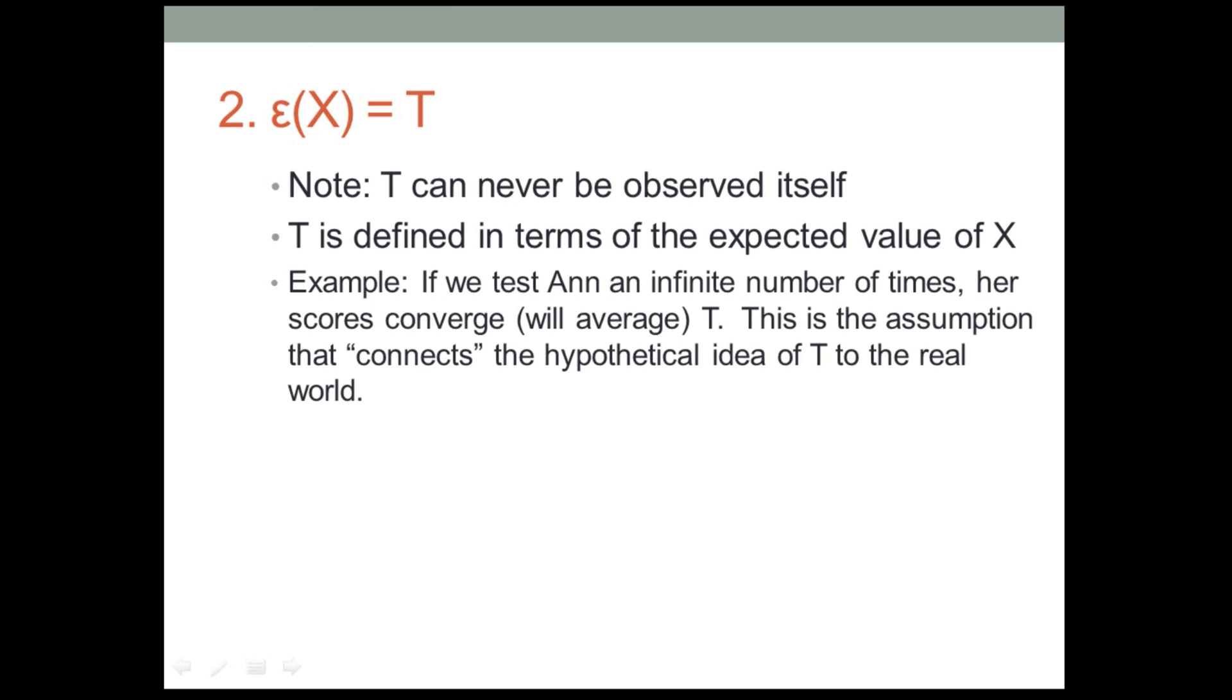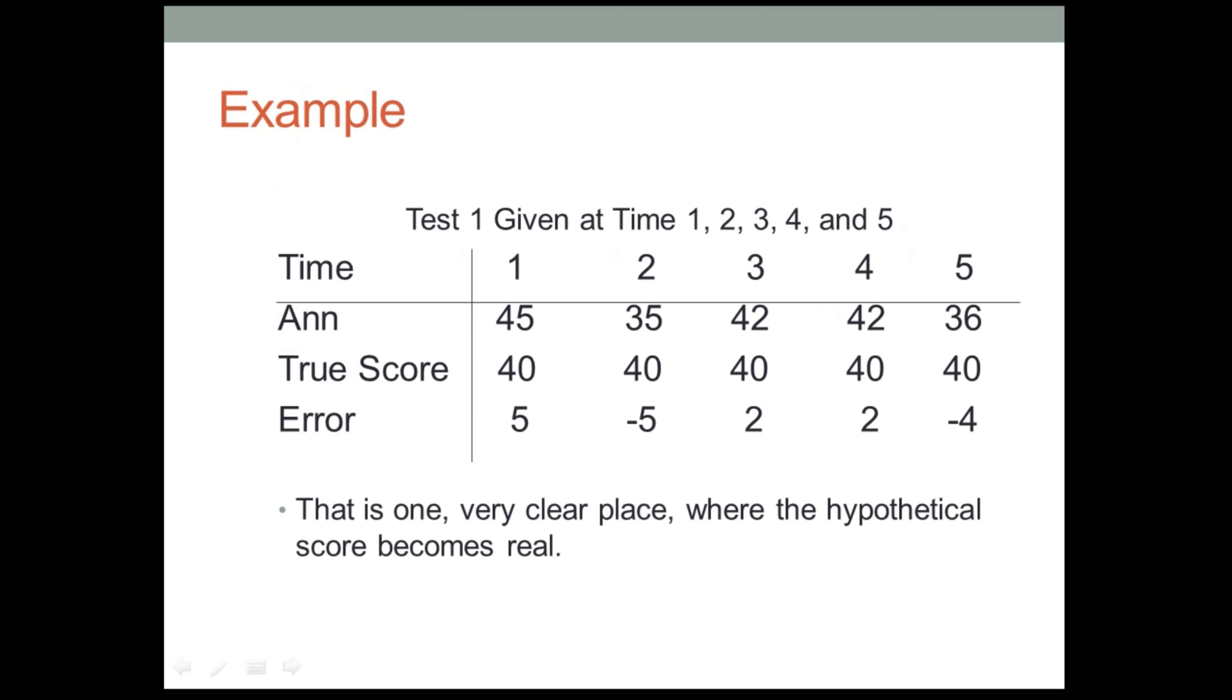For example, if we go back to the case of Anne and her creativity test, if we test Anne, say, five times, or an infinite number of times, but if we test her five times, over those five times, her scores will tend to converge or average her true score value. This is the assumption in classical test theory that connects the hypothetical idea of the true score to the real world. I've plotted out an example of this over here, where we have given Anne the creativity test, let's say, five weeks in a row, five different time, five different testing periods. And on those five tests, she will get five different scores. You're familiar with this if you happen to take the SAT or ACT more than once, and you notice, as you can hardly fail but notice, that you got two different scores.